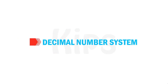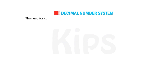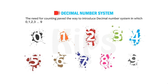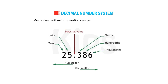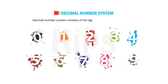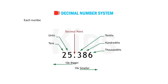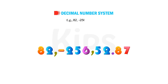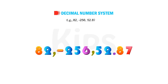First, let us start with the decimal number system. The need for counting paved the way to introduce the decimal number system, in which digits 0 through 9 are used to form any number. Most of our arithmetic operations are performed with decimal numbers. The decimal number system consists of 10 digits, that is 0 to 9, with the base 10. Each number can be used individually or grouped to form a numeric value — for example, 82, -256, 52.87, etc.